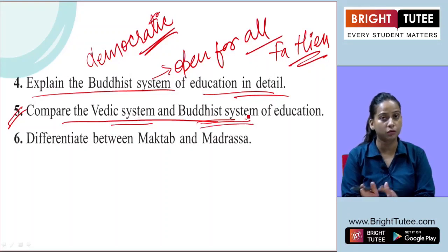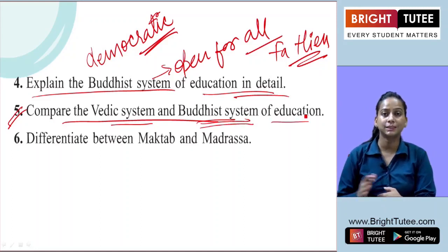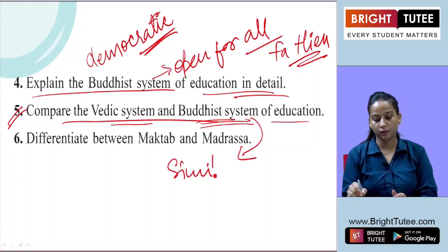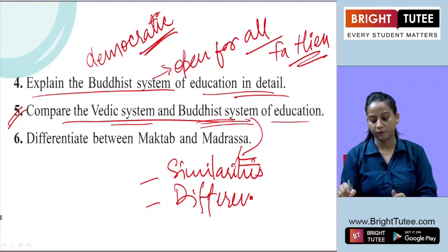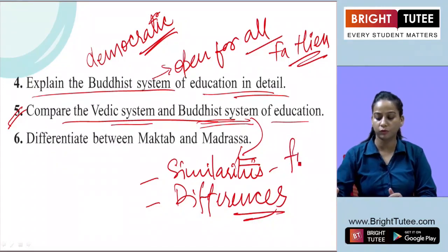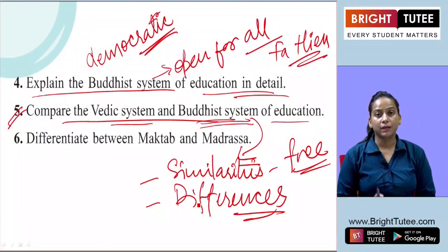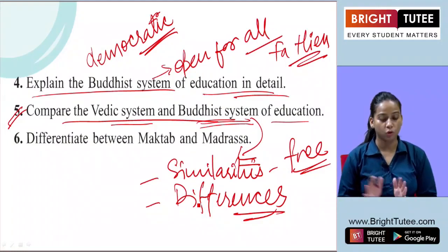In the Buddhist system, you also have to mention the curriculum of both systems. You can discuss similarities as well as differences. A similarity is that in both systems education was free and accommodation was also free. A key difference is that in the Vedic system they asked for complete detachment from worldly pleasure, but no such requirement existed in the Buddhist system. All these points of comparison can be mentioned here.